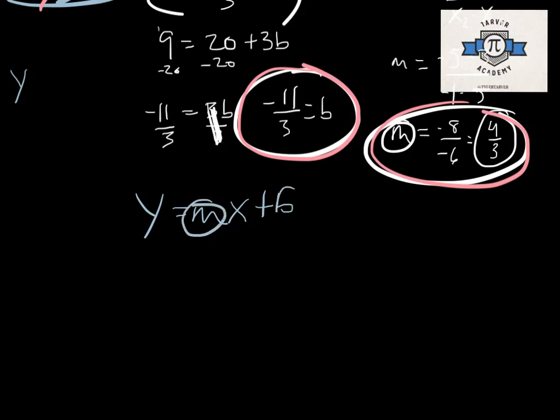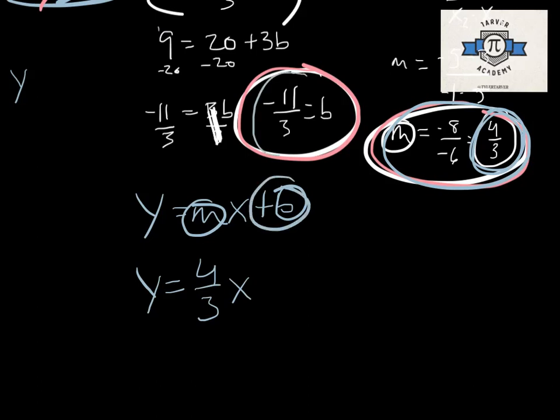y equals mx plus b. Plug in what we know. We know our m. We know our b. y equals, what's our m? It's this little guy right here. 4 over 3, which is our slope, times x, and then plus b, which what happens when you plus a negative? It just turns into a minus. There you go. And you've got your answer.